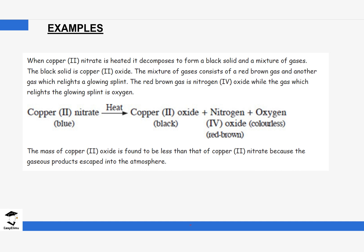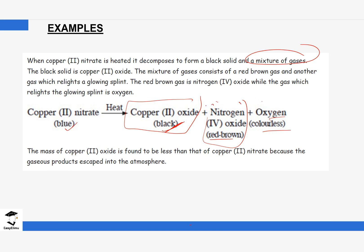An example of a permanent chemical change is heating copper nitrate, which is blue in color. When heated, it releases a mixture of gases — nitrogen dioxide, which is red-brown in color, and oxygen, which is colorless. The mass definitely changes because gases are lost to the atmosphere, and a new substance — copper(II) oxide, which is black — is formed. Even if we added the reactants back together, we cannot recover the initial product, so it cannot be reversed. This process also releases heat into the environment.